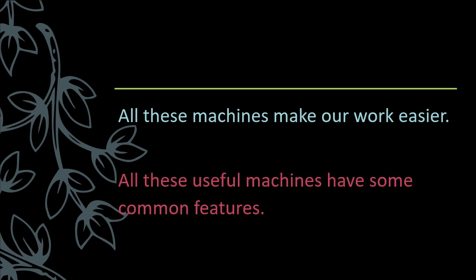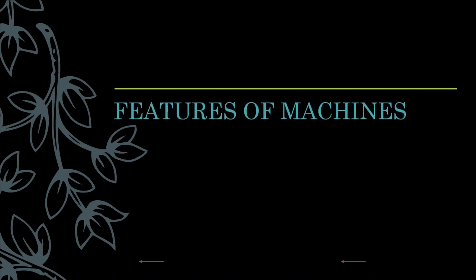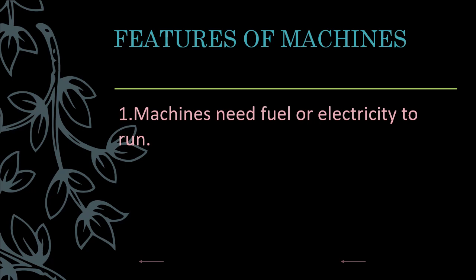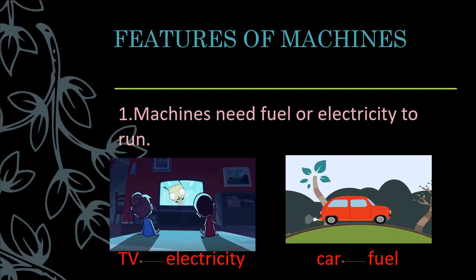All these useful machines have some common features. Features of machine. First, machines need fuel or electricity to run. What happens to the TV, fridge, or fan when there is no electricity? They switch off. This is because all machines need energy to run. This energy they get either from electricity like the TV or from fuel like the petrol in a car.